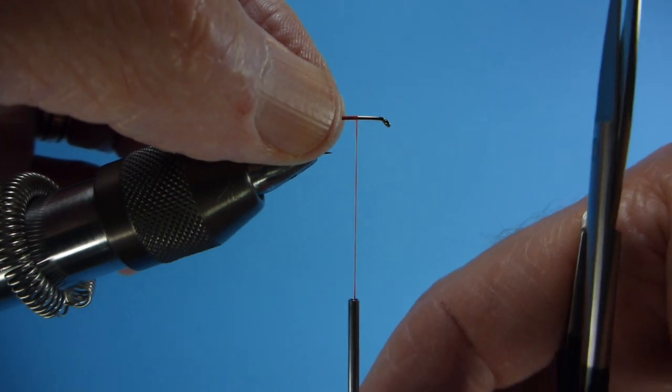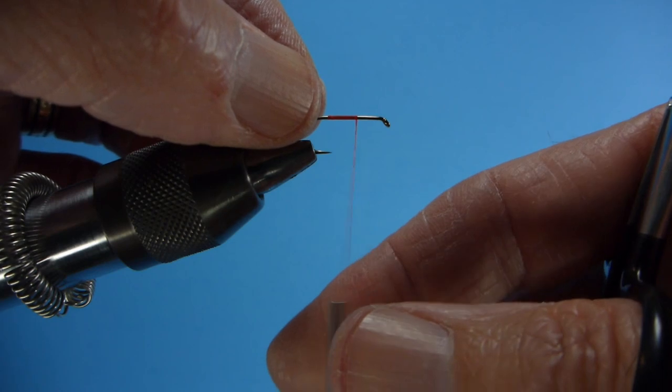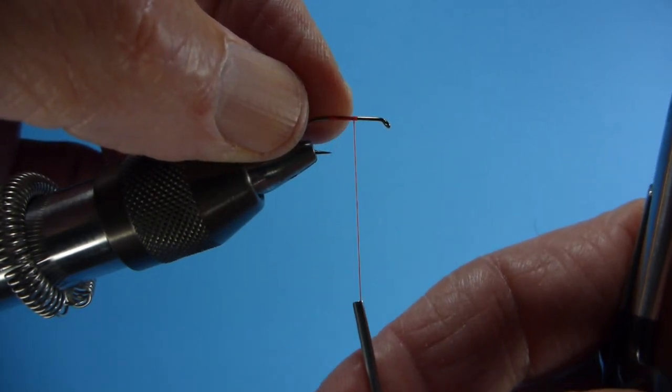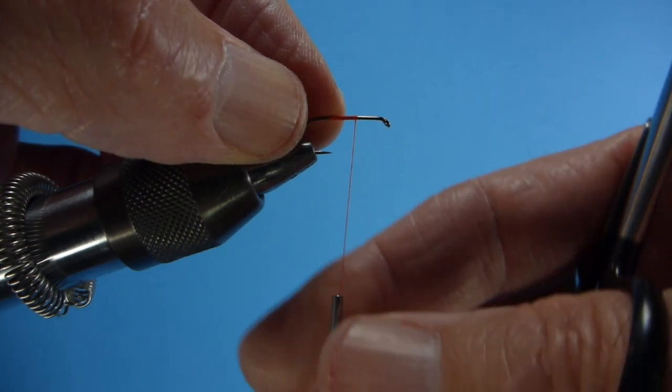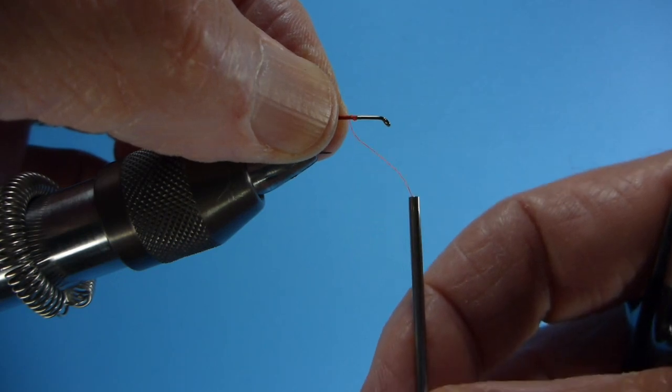Now, how do I remember that? Counterclockwise—I'll twist it a little further so you can really see it—will want to kick to the back. It just wants to jump to the back, versus a clockwise twist where it wants to kick to the front.